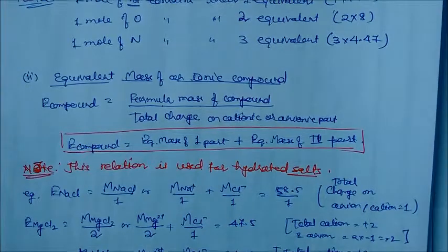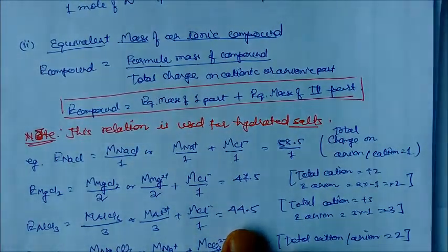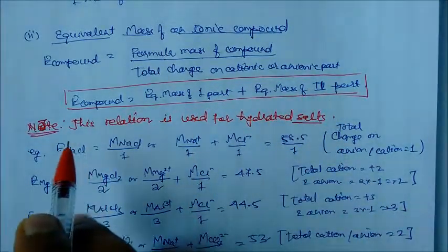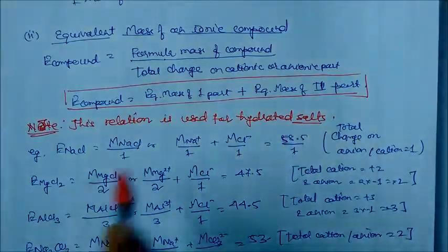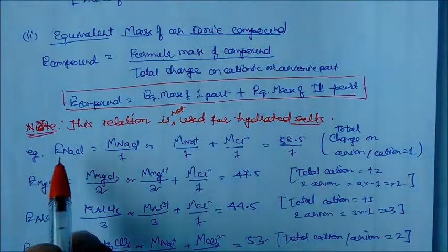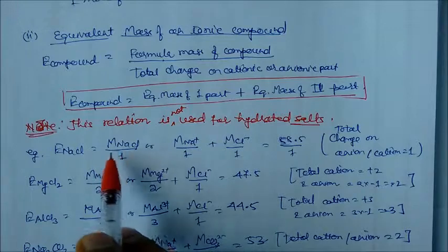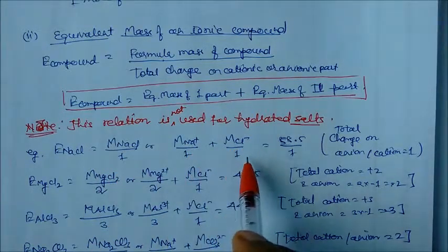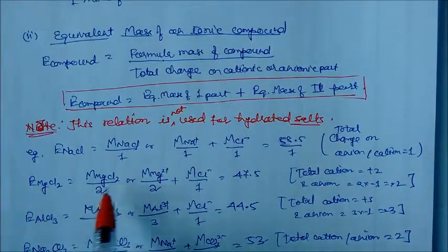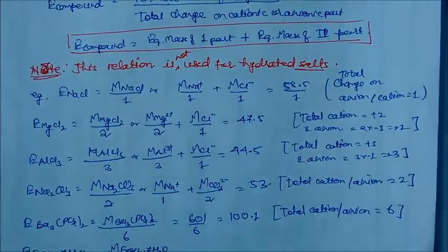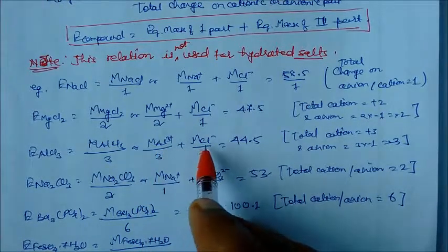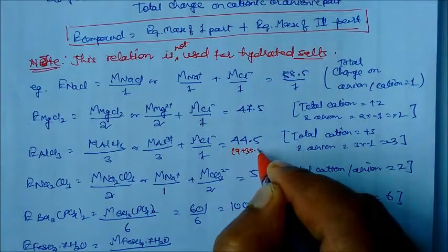For ionic compounds, the formula is: equivalent mass = formula mass of compound divided by total charge on cationic or anionic part. For NaCl: charge is 1, so (23+35.5)/1 = 58.5/1 = 58.5 grams. For MgCl2: Mg charge is 2, equivalent mass = 95/2 = 47.5 grams. For AlCl3: divided by 3, total = 44.5 grams (Al = 9, Cl = 35.5). For Na2CO3: M/2, sodium charge 1, carbonate charge 2, total = 53 grams.